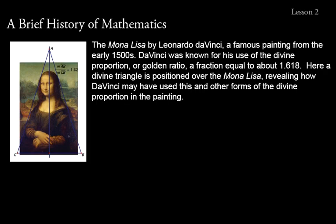Lesson two is titled 'A Brief History of Mathematics.' Like lesson one, we're not doing any math problems here. We're just learning some things about what math is and about its background, which I think are important. In lesson one we defined mathematics as a language of science and a God-given tool for measuring and classifying pattern and shape. Here we're going to look at the background of mathematics to help you understand the why behind mathematics — why it's important.